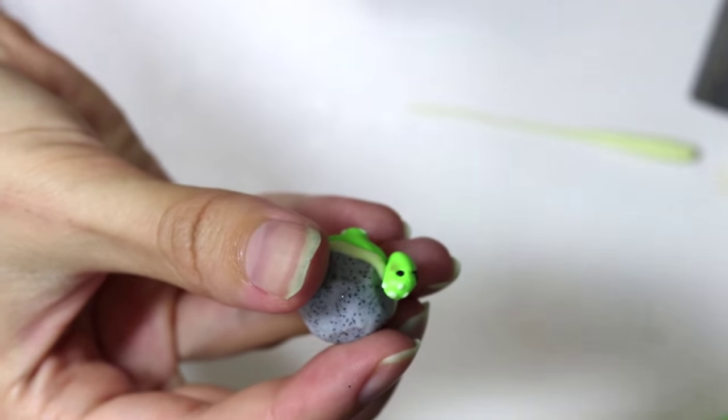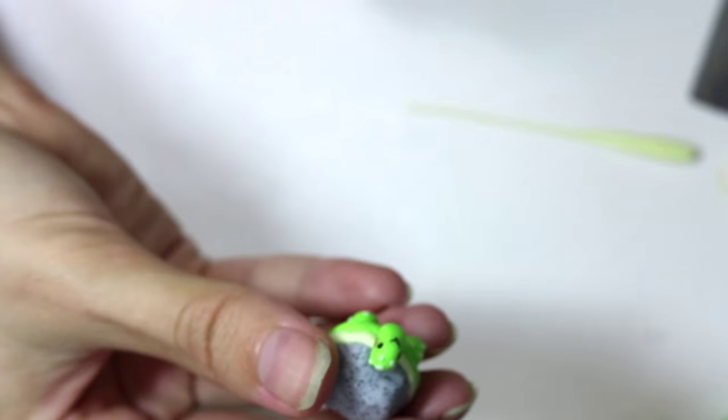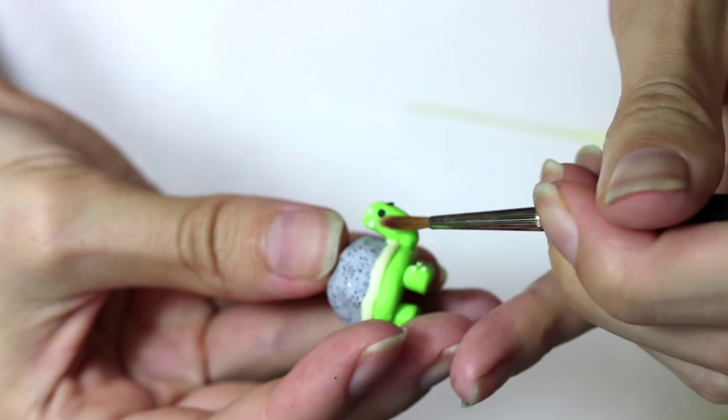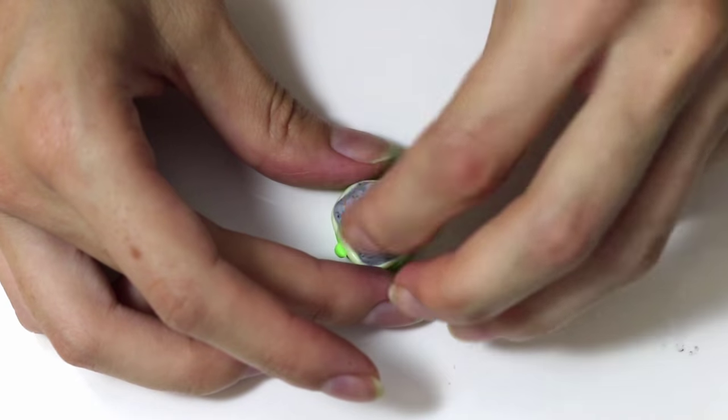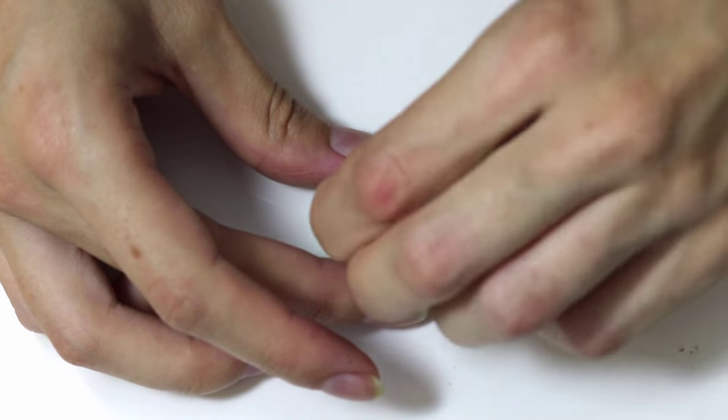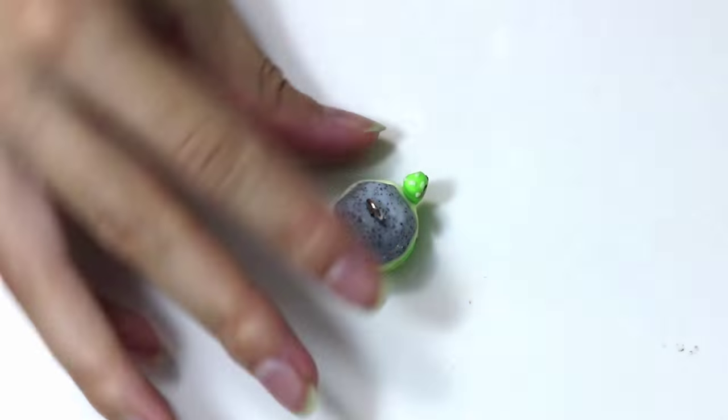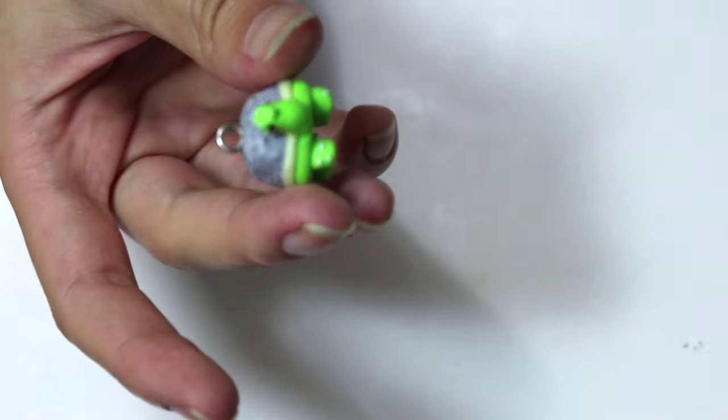So then from there I'm just giving him a little bit of blush. And then it's time to bake. And one more step before you bake it though. I'm adding in a head pin here so that I can make it into a charm.